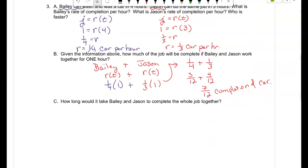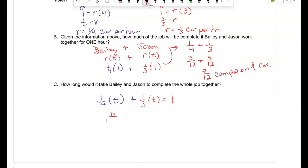Now, the question. How long would it take for them to do the whole job together? We know Bailey's rate is going to be one-fourth times whatever amount of time. I don't know how long it's going to take for him, but he's going to do a rate of one-fourth. Plus Jason, we know his rate is one-third, but they're working together, so is their time the same? Yeah. And I want a whole job completed, which is one. So I want one job completed.